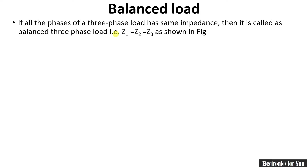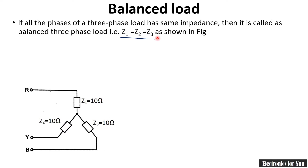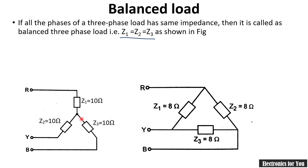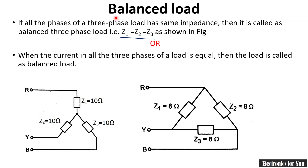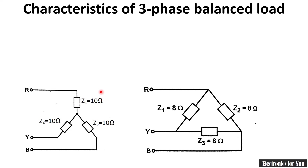Now a quick recap of balanced and unbalanced load. When Z1 equals Z2 equals Z3 — that is, all loads have the same value — it is called a balanced load. This applies to both star and delta connections where all impedances are the same value. Another definition: when the current flowing through all phases is the same, it is called a balanced load. An example of this is an induction motor.